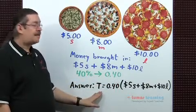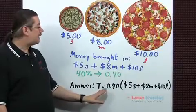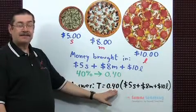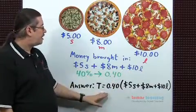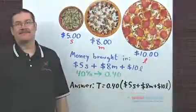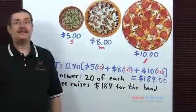For the final answer, I want to first let T equal the total money raised by the band, and then I'm going to let it equal 40% in decimal form times this expression. So here is our final answer: T = 0.40($5s + $8m + $10L).